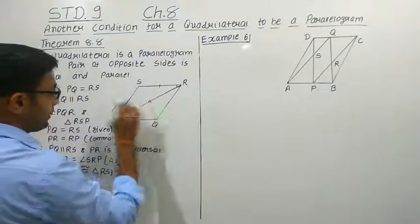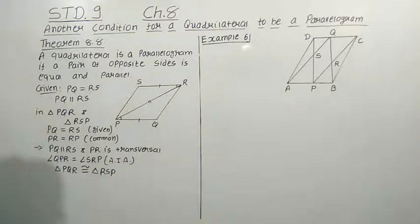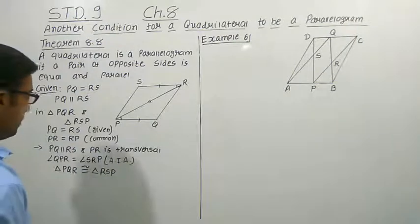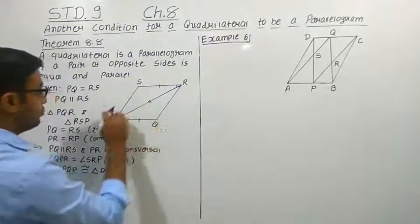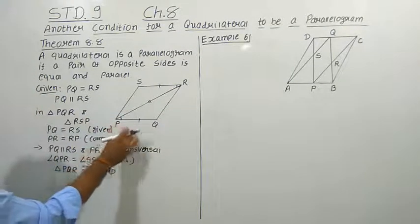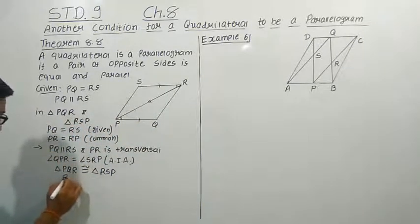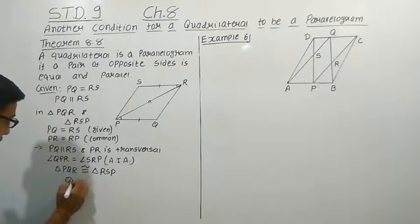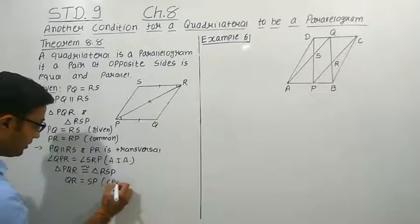As these two triangles are congruent, their corresponding parts will become equal. So we can write down that RQ is equal to SP, or PS is equal to RQ — by CPCT.